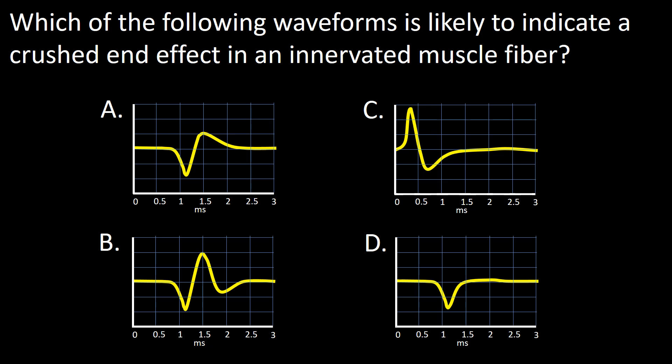Now I have brought the question back so we can take a quick look at the waves. A: An initially positive biphasic wave. B: An initially positive triphasic wave. C: An initially negative biphasic wave. And D: A monophasic positive wave.